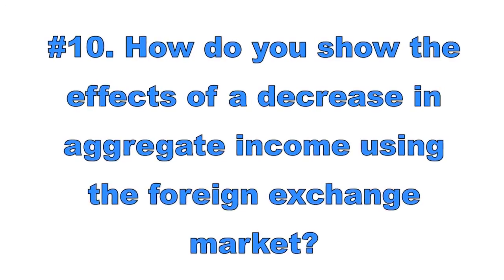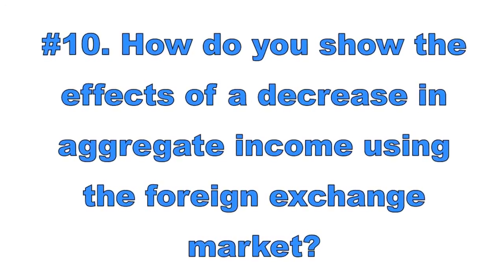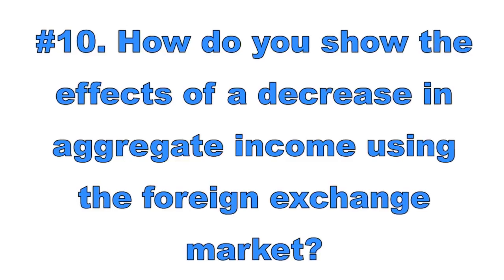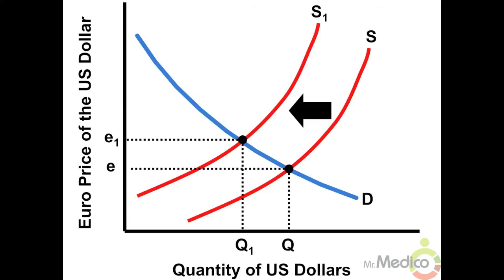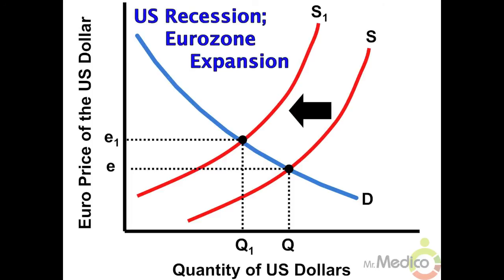Number ten: how do you show the effects of a decrease in aggregate income using the foreign exchange market? Suppose one economy is in recession while another is strong. The country in recession cannot import as many goods since income is low, so it supplies less currency to the foreign exchange market. When this happens, the value of that currency will appreciate. This diagram assumes that the US is in recession and the German economy is doing well.